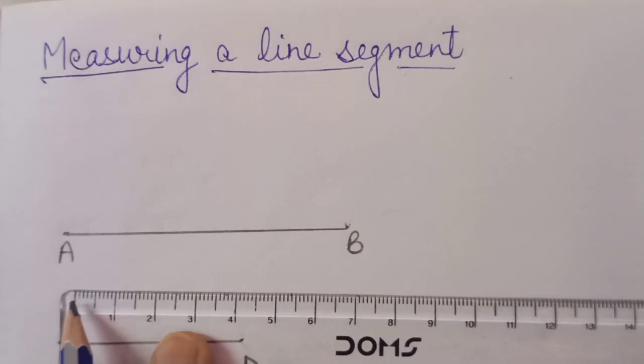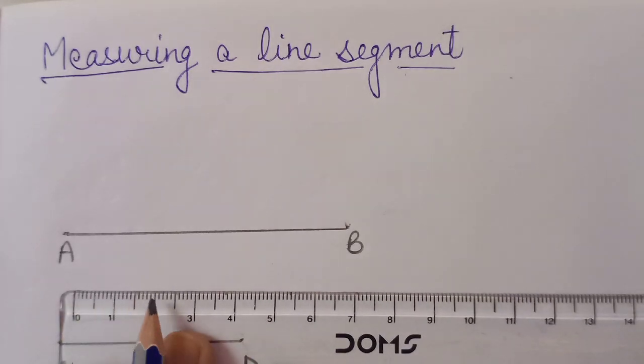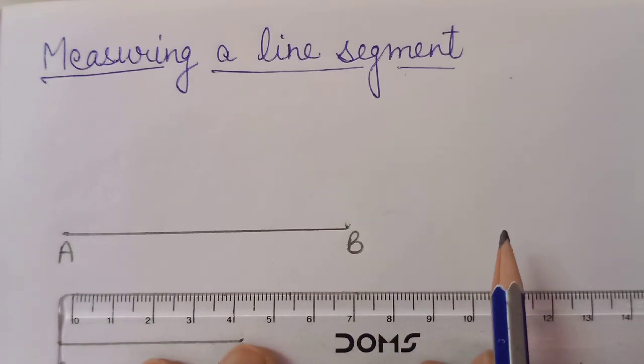Say in this scale, we start from 0. Then 1, 2, 3. Like this, we go on. These are the centimetres.